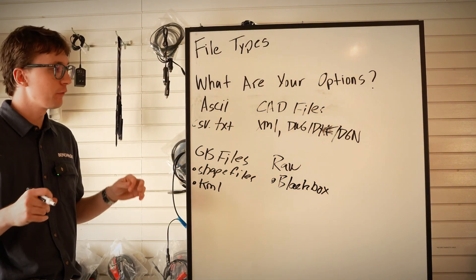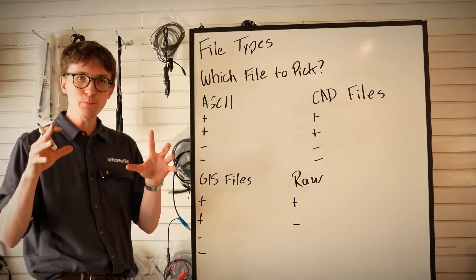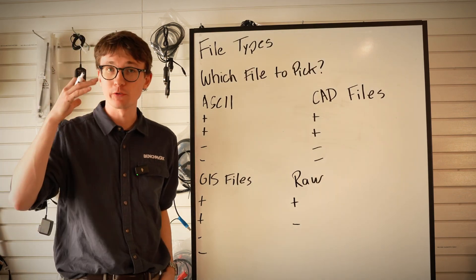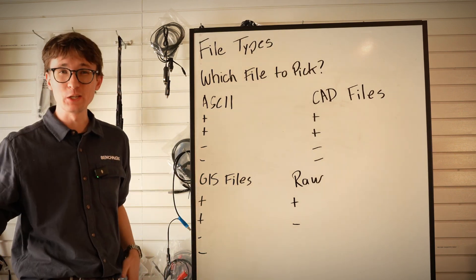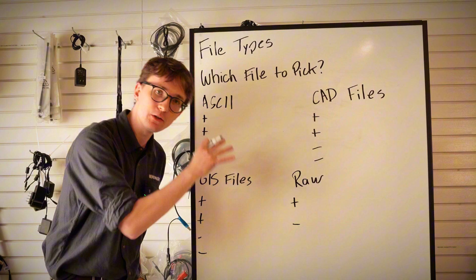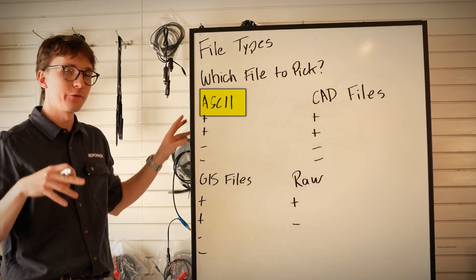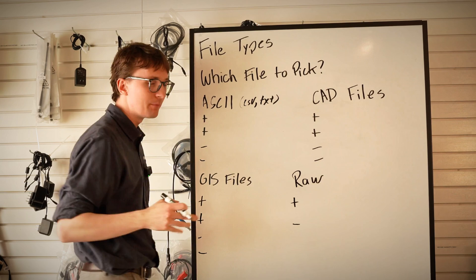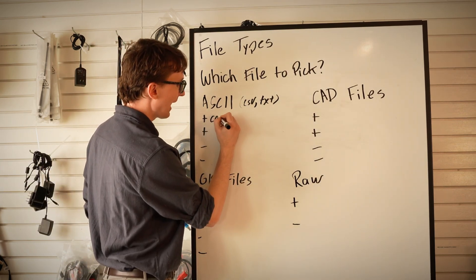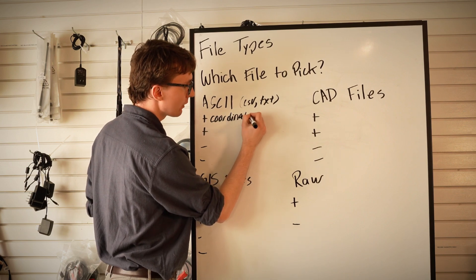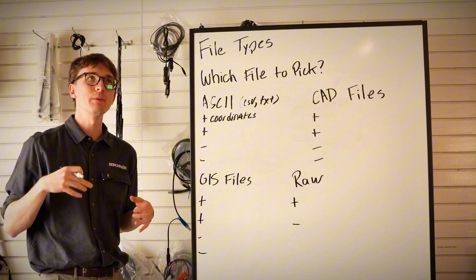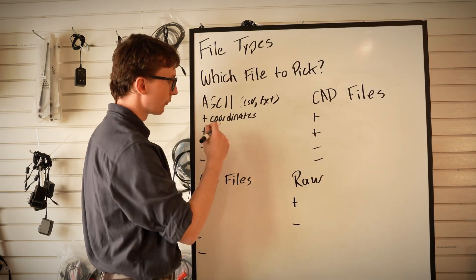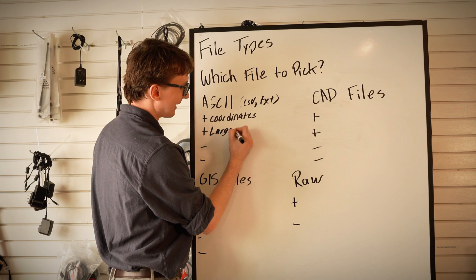The question is which of these are best for your deliverables in the field. I've cleared the board to cover the pros and cons of each file type so it's clear which is right for you depending on what you need from your data collector. The first one is ASCII files — CSV and text files. These are the most simple file type. They contain your coordinate information and not much else. They're great for large lists of coordinates, like a big staking list or a bunch of control points.